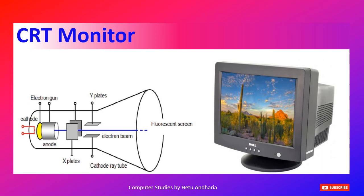In the CRT diagram you can see a fluorescent screen on the outside which displayed the output. At the back there was an electron gun throwing light in three colors — RGB: red, green, and blue. Different proportions of that light fell on the screen to show different colors and images.